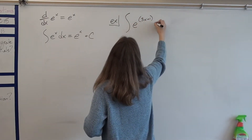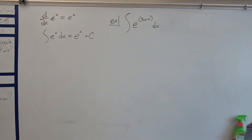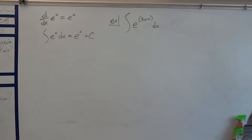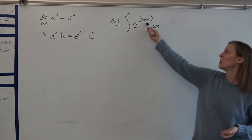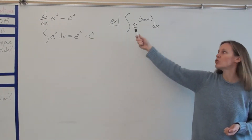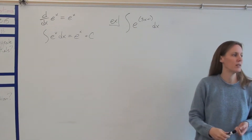The derivative of e to the x is e to the x. So let's start with e to the 3x plus 1. Whenever the exponent for e is not just x, that is usually your u — about 92% of the time. If you don't know what to do, ask yourself: is my exponent x? If it's not, let u be that exponent and do a u-substitution. Everyone try this.